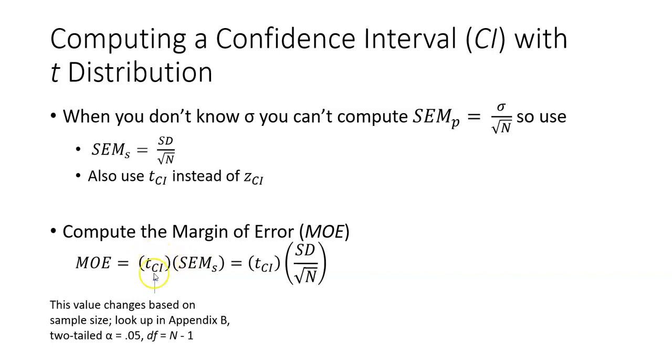But you're also going to be using the factor that expands the margin of error from the 68%, which is what you get if you just use the SEM, the 68% margin of error. You want a 95, so you need to multiply this times a factor that will increase that to the 95% confidence interval.